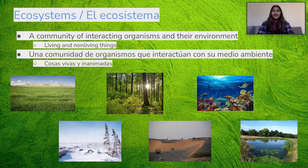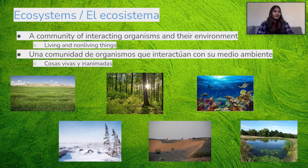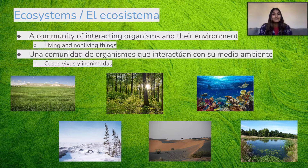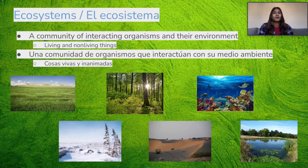Let's start by talking about what an ecosystem is. An ecosystem is a community of interacting organisms in their environment. It's made up of both living and non-living things. In these pictures are some examples of different ecosystems, but they also don't have to be this big — ecosystems are anywhere where there is a community of interacting organisms in their environment.